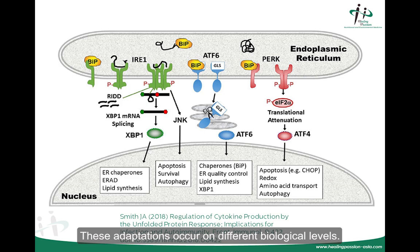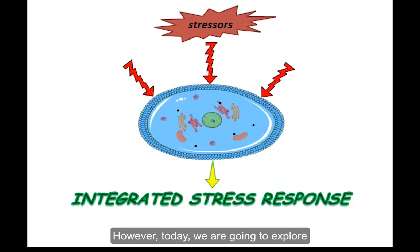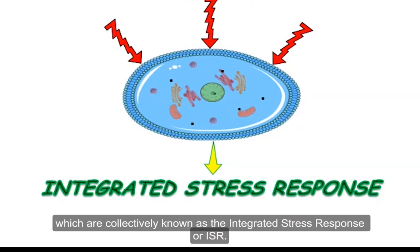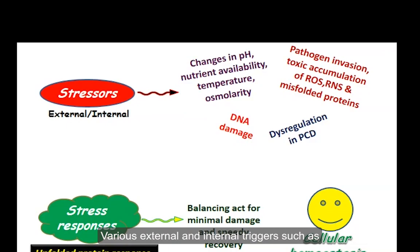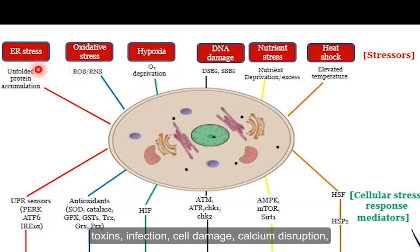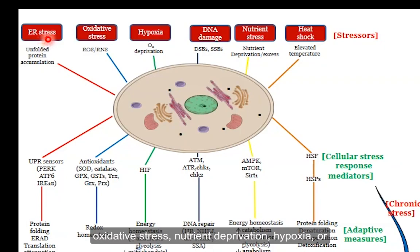Today, we are going to explore the machinery at the cellular level, which is collectively known as the Integrated Stress Response, or ISR. Various external and internal triggers — such as toxins, infection, cell damage, calcium disruptions, oxidative stress, nutrient deprivation, hypoxia, or accumulation of non-functional or unfolded proteins — activate a variety of cellular ISR pathways.